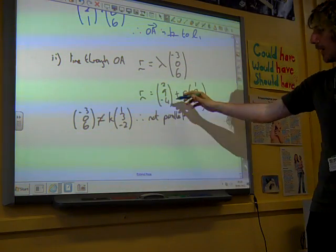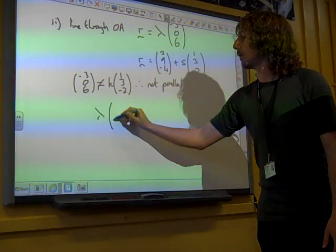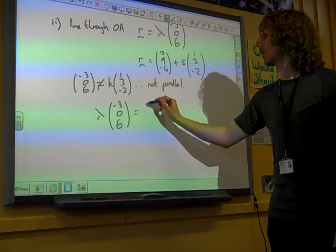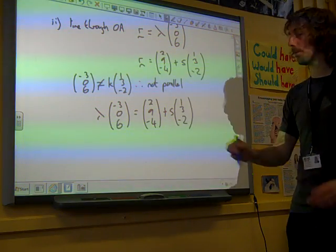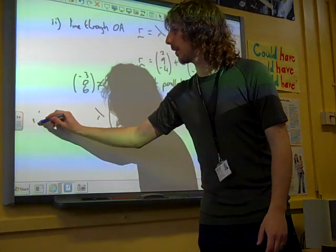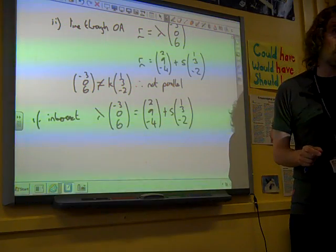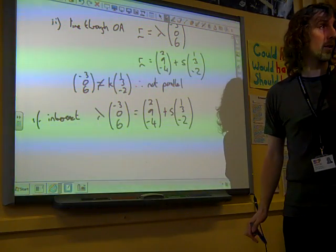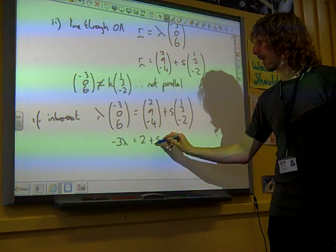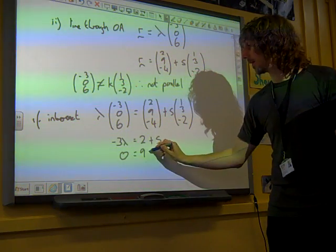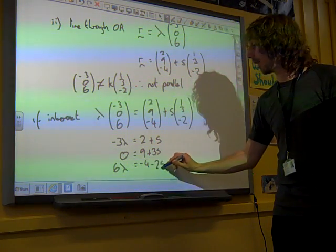If we're dealing with lines intersecting, then we equate the two equations. So we're going to put lambda minus 3, 0, 6 equal to 2, 9, minus 4, plus S, 1, 3, minus 2. The three equations are minus 3 lambda is 2 plus S, 0 is 9 plus 3S, and 6 lambda is minus 4 minus 2S.